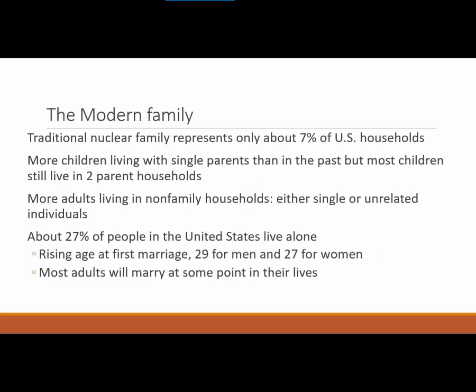Compared to previous time periods, the nuclear family today only represents about 7% of U.S. households — not U.S. family types, but U.S. households. That's because we have more adults living in non-family households than ever, either in single individual households or living with unrelated individuals, whether as cohabitating partners or simply as roommates. 27% of people in fact live alone. Most adults will still marry at some point in their lives, though they live alone longer because there is a rising age of first marriage — 29 for men, 27 and a half for women.